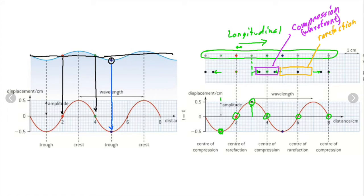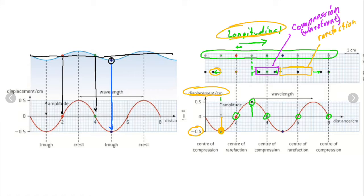In the graph it looks like the wave has moved down, but it hasn't. The graph represents displacement, and negative displacement for a longitudinal wave means to the left. The important idea is making the connection between the up-and-down of the displacement graph versus the left-and-right motion of the longitudinal wave. Where the slope is negative, that is where we get the compression. Where the slope is positive, that's where the rarefaction occurs.